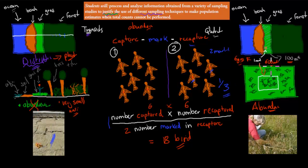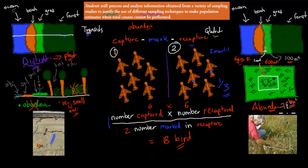Quadrants are useful for abundance, but they're not great for distribution since you're only looking at a very small area. They're good for estimating how much of a plant there is. But for animals like a fox or bird — if you put a square in the grass, it's not going to stay there. So quadrants measure abundance of plants and maybe snails, but not animals.